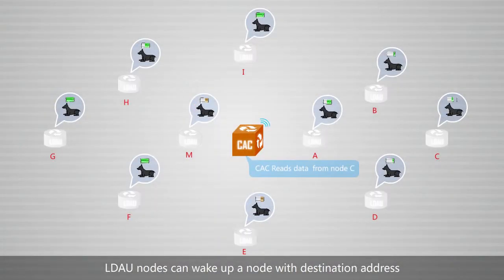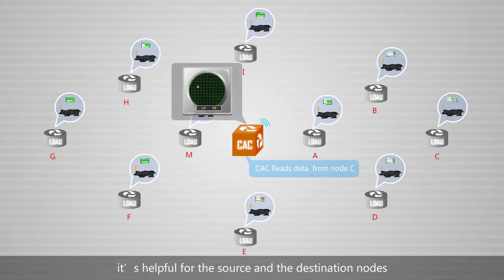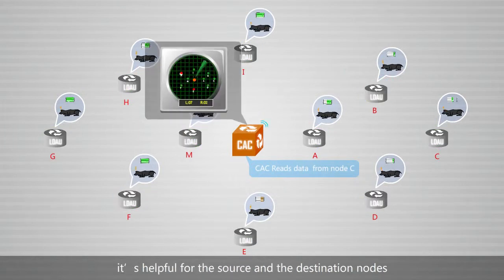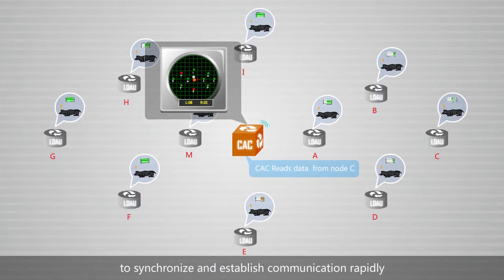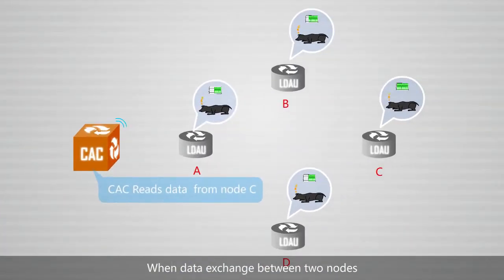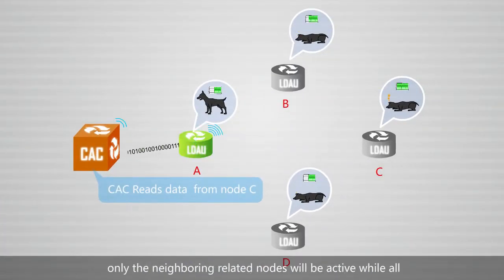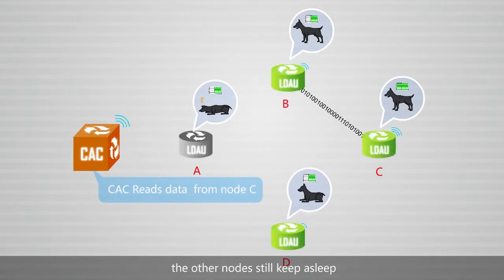LDAU nodes can wake up a node with destination address. It's helpful for the source and the destination nodes to synchronize and establish communication rapidly. When data exchange between two nodes, only the neighboring related nodes will be active, while all the other nodes still keep asleep.